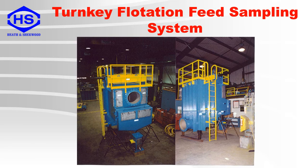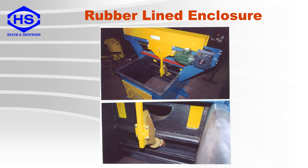Here is an example of a cross-stream sampler with an integrated enclosure — you can see the inlet and outlet connections. This is the inside of a cross-cut sampler, which is rubber lined. You can see the drive mechanism for the cutter, the cutter itself, and the sample increment discharge pipe. Also shown is a drip ring, which reduces sample contamination.